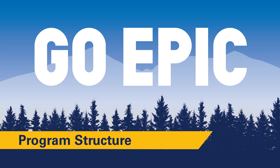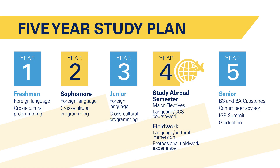Let's review the structure of your time with Interdisciplinary Global Programs as an NAU student. With IGP you are in a five-year study plan with five levels. In levels one, two, and three you will be taking courses in your STEM or business major as well as your global language and culture courses. You will also be participating in IGP programming to help you develop your competencies and prepare you for the next level in the program.